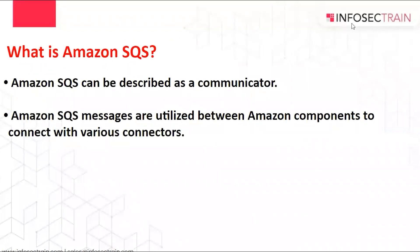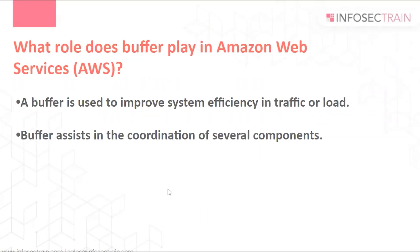What is Amazon SQS? Amazon SQS is Amazon Simple Queue Service and it can be described as a communicator. Amazon SQS messages are utilized between Amazon components to connect with various connectors. Amazon SQS is a dependable and high-performance solution that provides queues to support message transactions between applications or among application components. This tool automates the communication aspects of software development, freeing up developers' time to focus on programming.